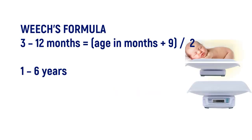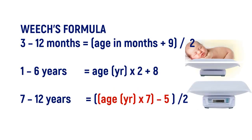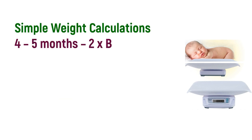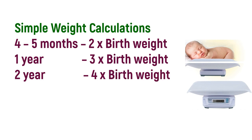Weight formulas: 1. For 3 to 12 months: (age in months + 9) ÷ 2. 2. For 1 to 6 years: (age in years × 2) + 8. 3. For 7 to 12 years: (age in years × 7 − 5) ÷ 2.